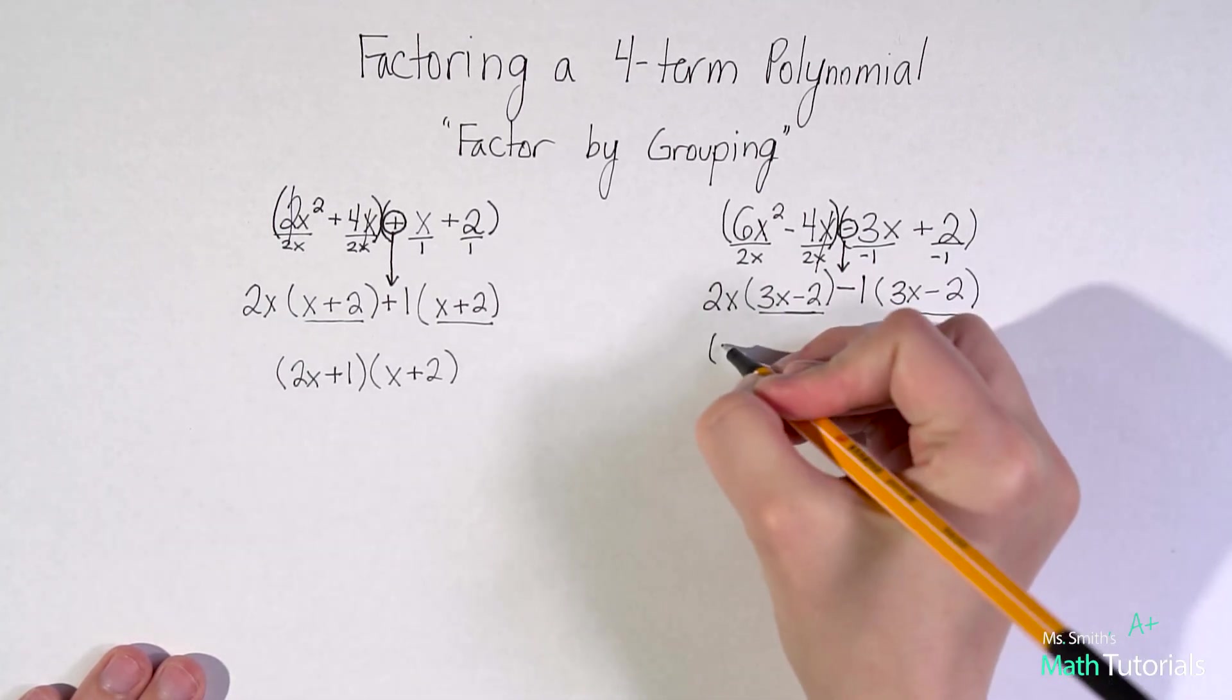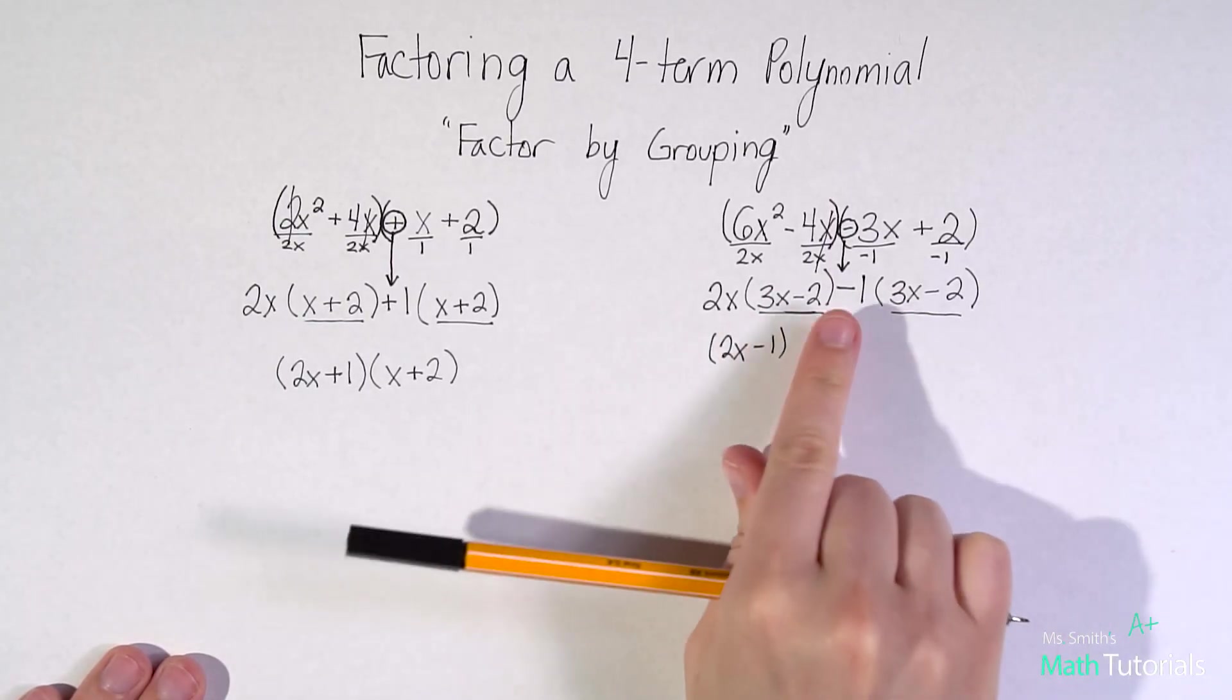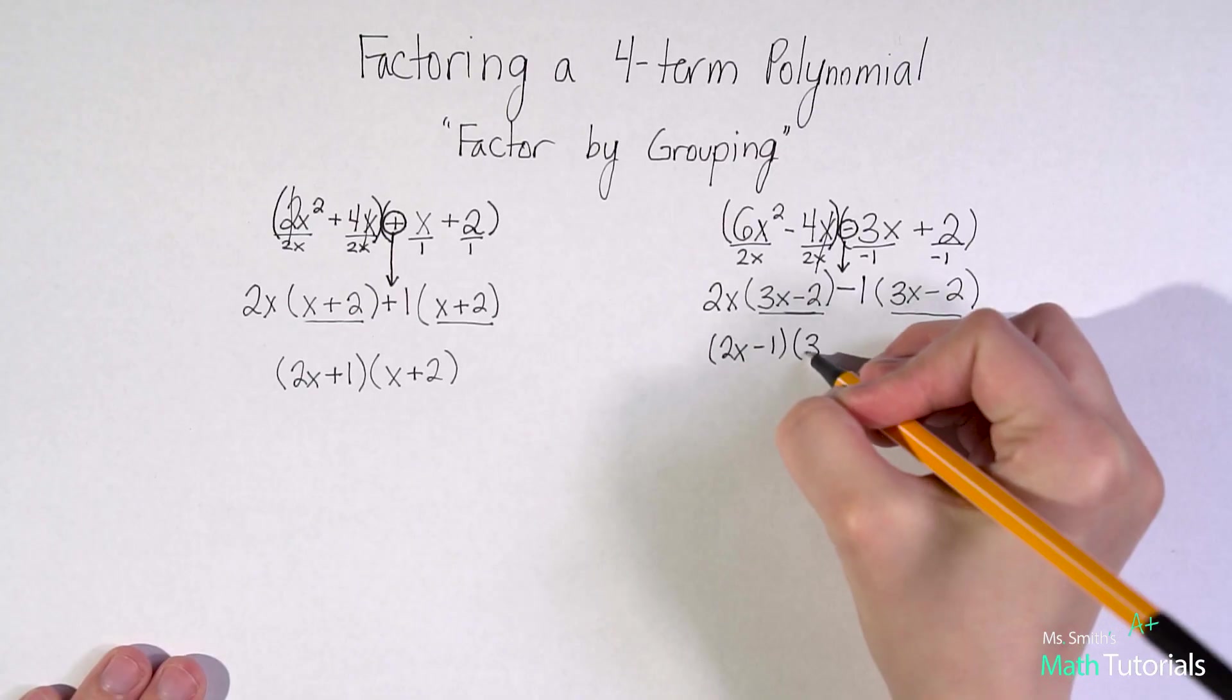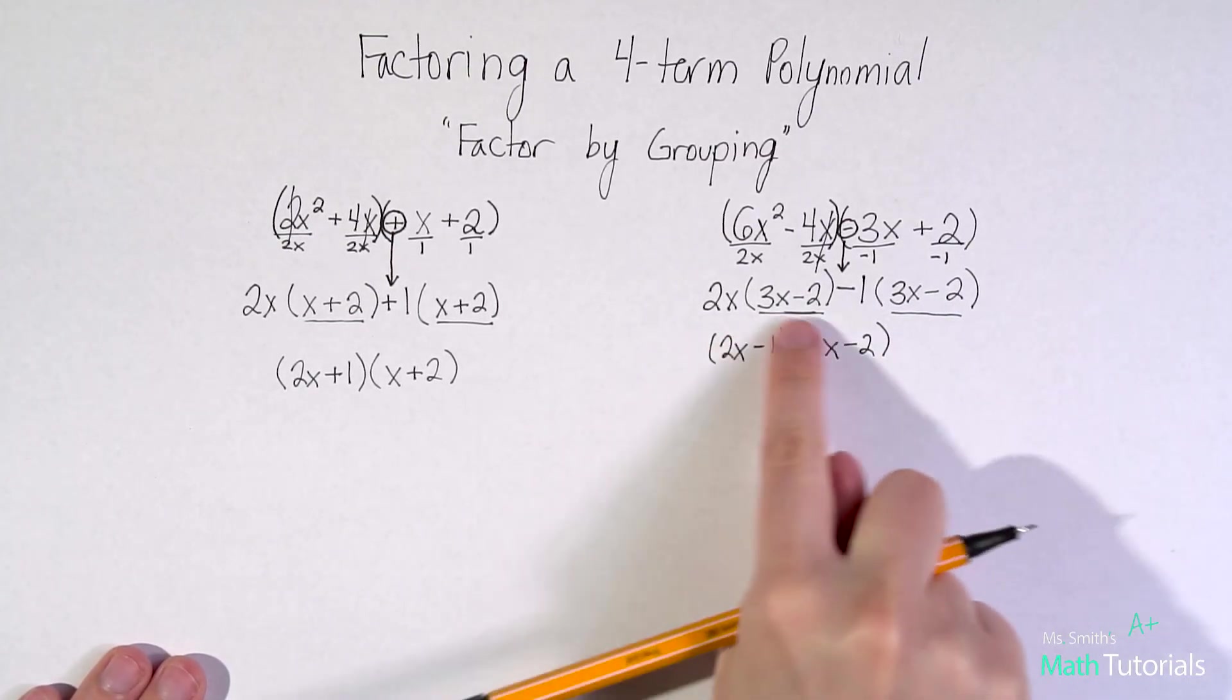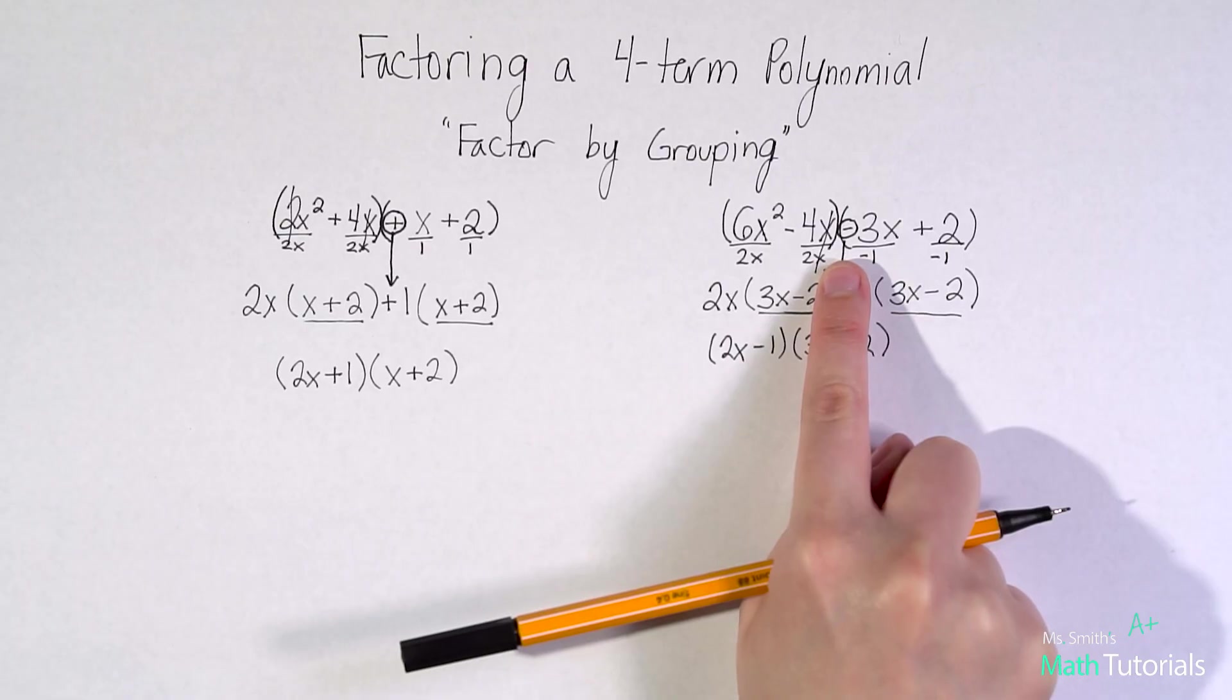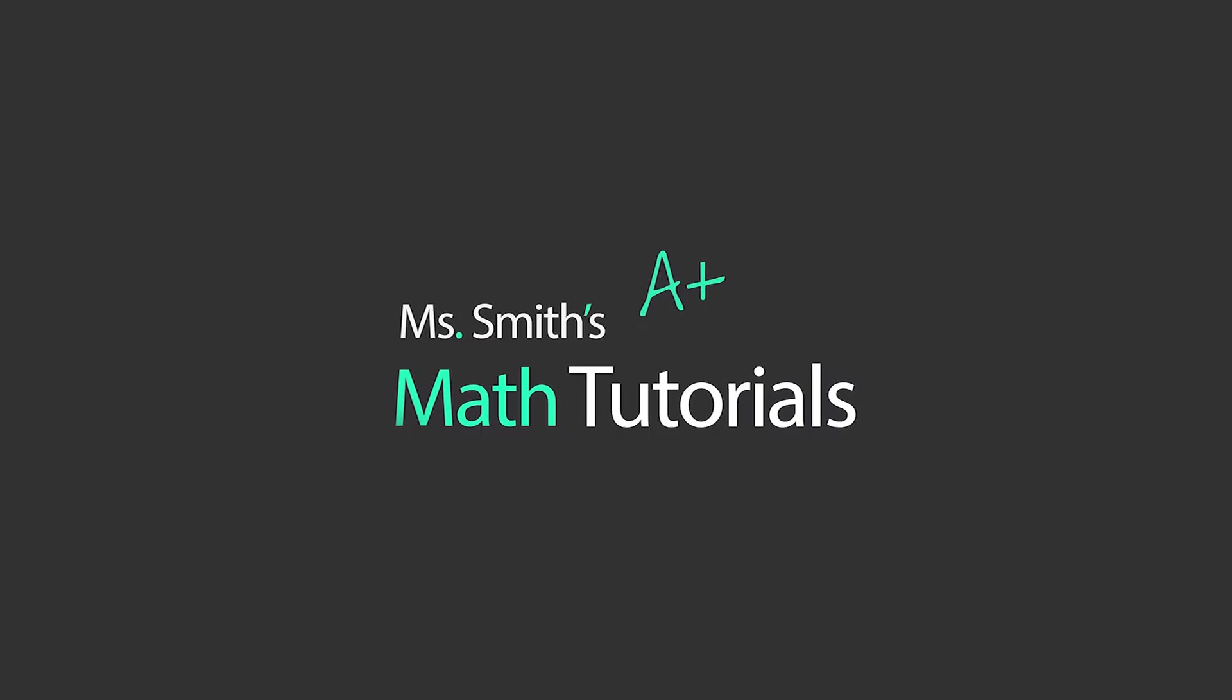So now I group together what I have in front of the parentheses. So the 2x and the minus 1 can join together. And then I pull out one twin, just one. And there we go. If I were to foil this back, do first, outer, inner, last, you should be taken back to the original polynomial. This has been Ms. Smith's Math Tutorials.